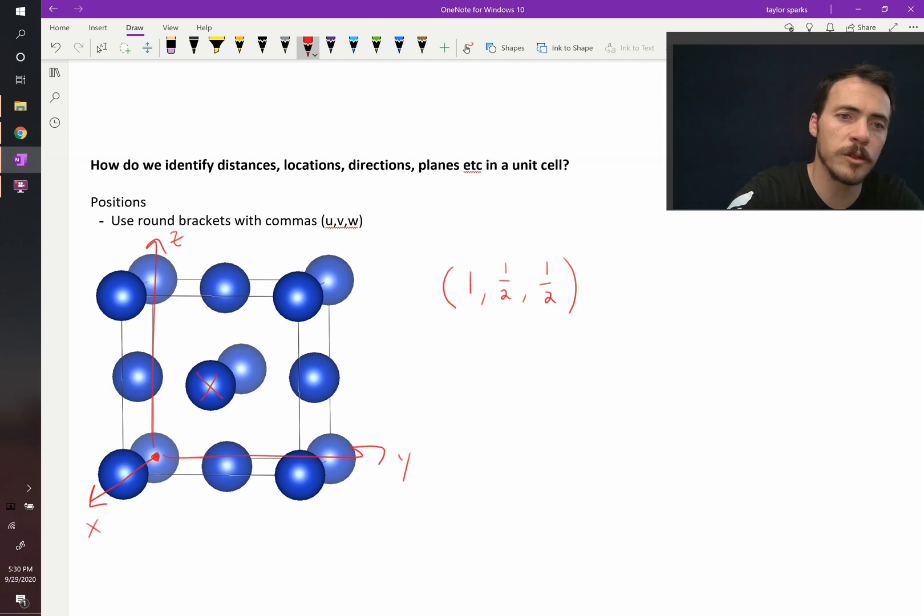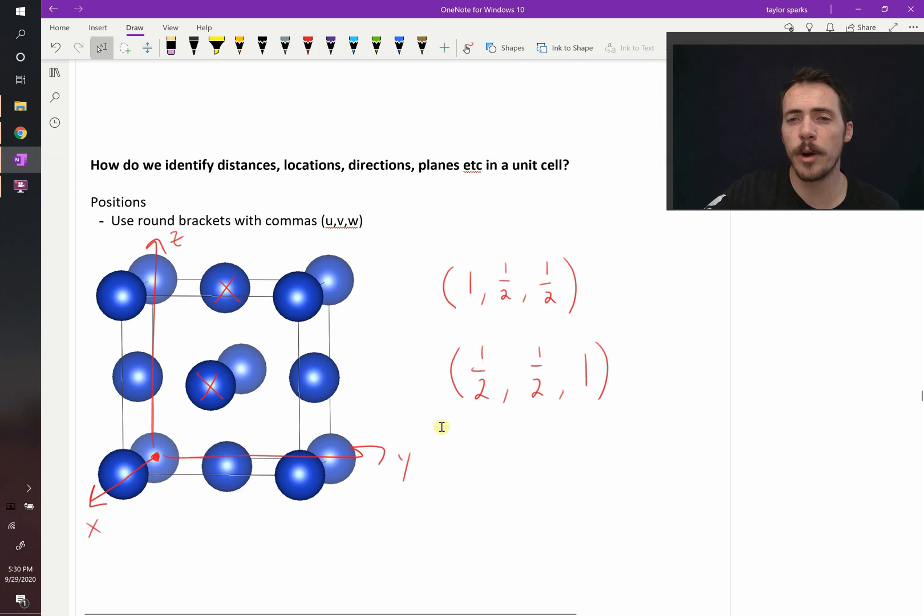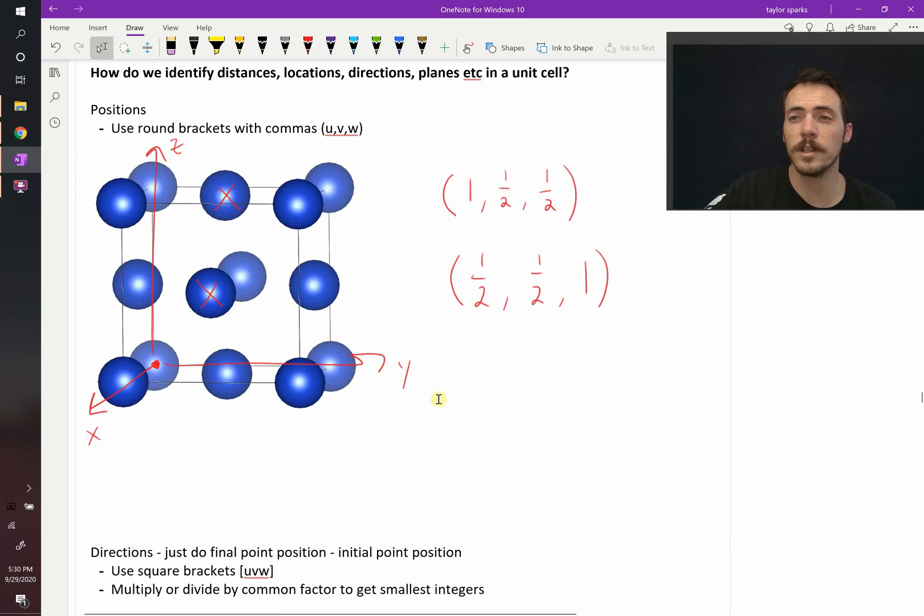What if we wanted to do this position up here? Alright, that's only half the way forward in the x direction. It is half the way in the y direction, and it is 1 in the z direction. Pretty straightforward. Alright, so that's positions. Round brackets, use commas. And you can leave things as fractions. You need to leave them as fractions.